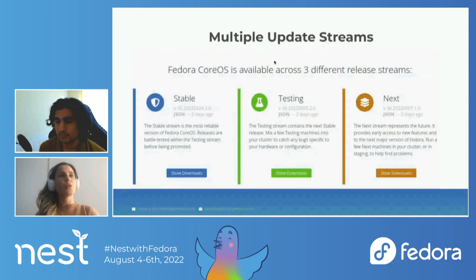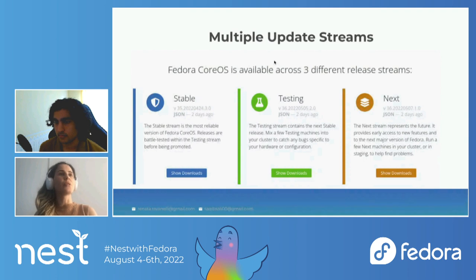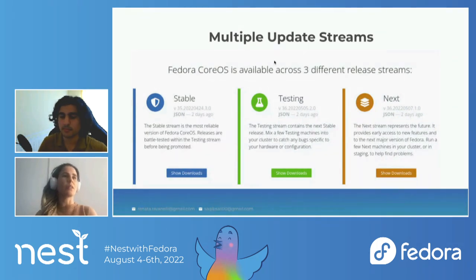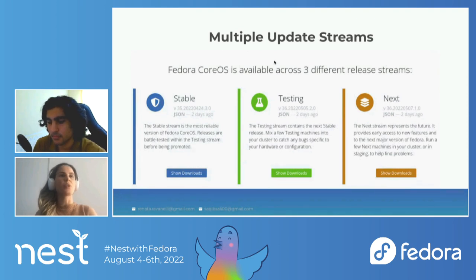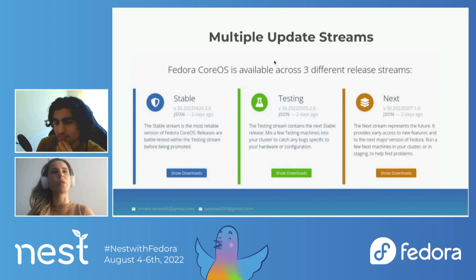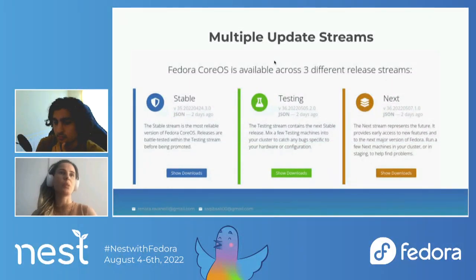We provide three streams for Fedora CoreOS, with releases every two weeks. The first stream is 'next', which is basically where development happens — it's focused on experimental features and major Fedora base updates. For example, when moving from Fedora 35 to Fedora 36, it will first land in 'next'. After two weeks it gets promoted to 'testing', where we validate everything. After that we have time to fix issues, and then it gets promoted to 'stable'. This way, once we reach stable, it should be a reliable operating system.